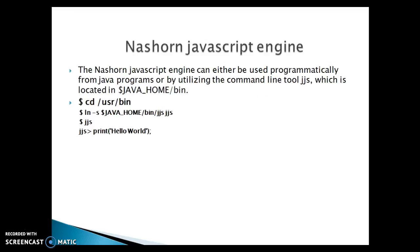The Nashorn JavaScript engine can either be used programmatically from a Java program, or by utilizing the command line tool called jjs, which is located in the Java bin directory.